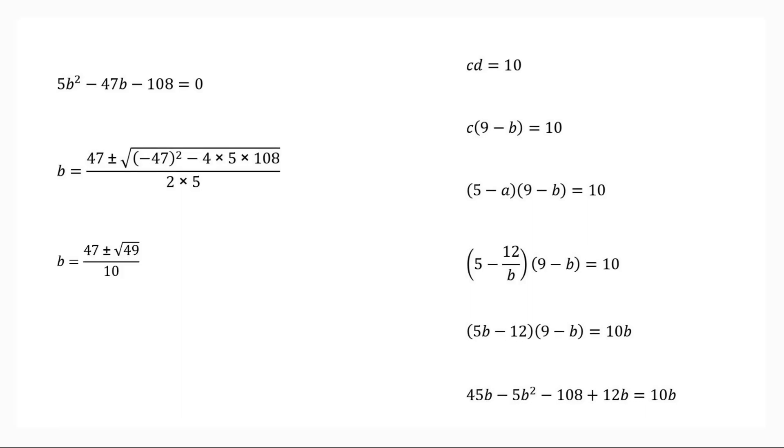Or B equals 47 plus or minus square root of 49 whole divided by 10 which is equal to 47 plus or minus 7 whole divided by 10. Or we get B equals 4 or B equals 27 over 5.